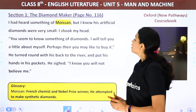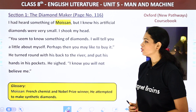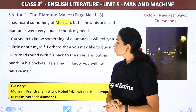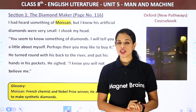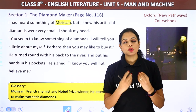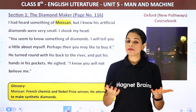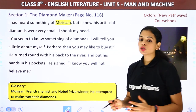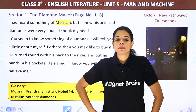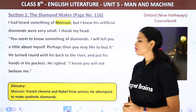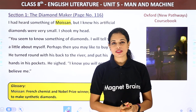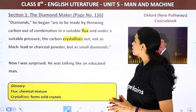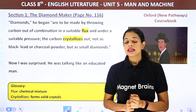'You seem to know something of diamonds. I will tell you a little about myself. Perhaps then you may like to buy it.' He turned round with his back to the river and put his hands in his pockets. He sighed: 'I know you will not believe it. Diamonds are to be made by throwing carbon out of combination, in a suitable flux and under a suitable pressure.'